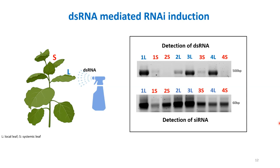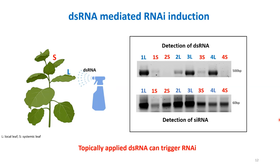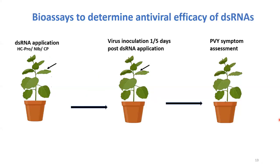A special kind of RT-PCR needs to be done called stem-loop RT-PCR, where special primers need to be designed. I'm not going into detail of how I did it, but if anyone is interested I can talk about that after the presentation. When I tried to detect my siRNA, I was able to detect siRNA in local as well as systemic leaves, suggesting that the topically applied dsRNA is triggering RNAi and siRNAs are being generated in the plant. So yes, topically applied dsRNA can trigger RNAi.